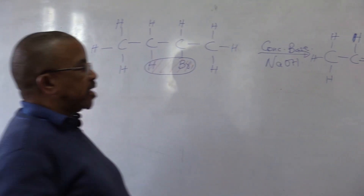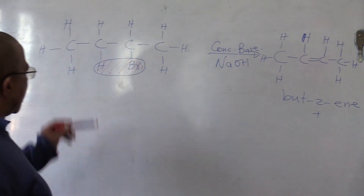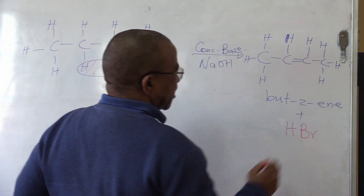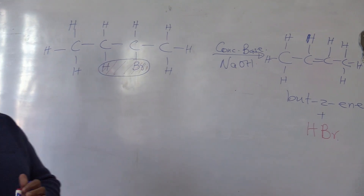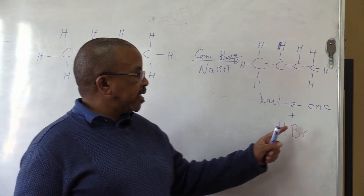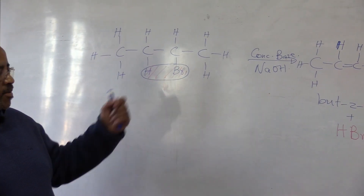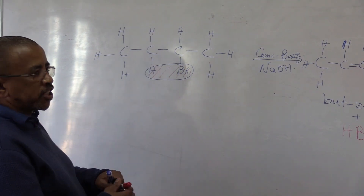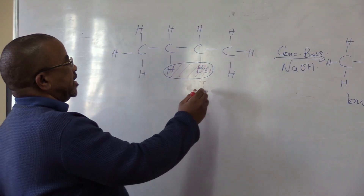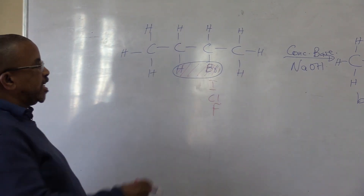So this gives us but-2-ene plus the eliminated HPR, which is hydrogen bromide. So when it eliminates — elimination — we have but-2-ene plus HPR. When it eliminates, low halogen PR — it can be Br, it can be I, it can be Cl, it can be F — either of these.